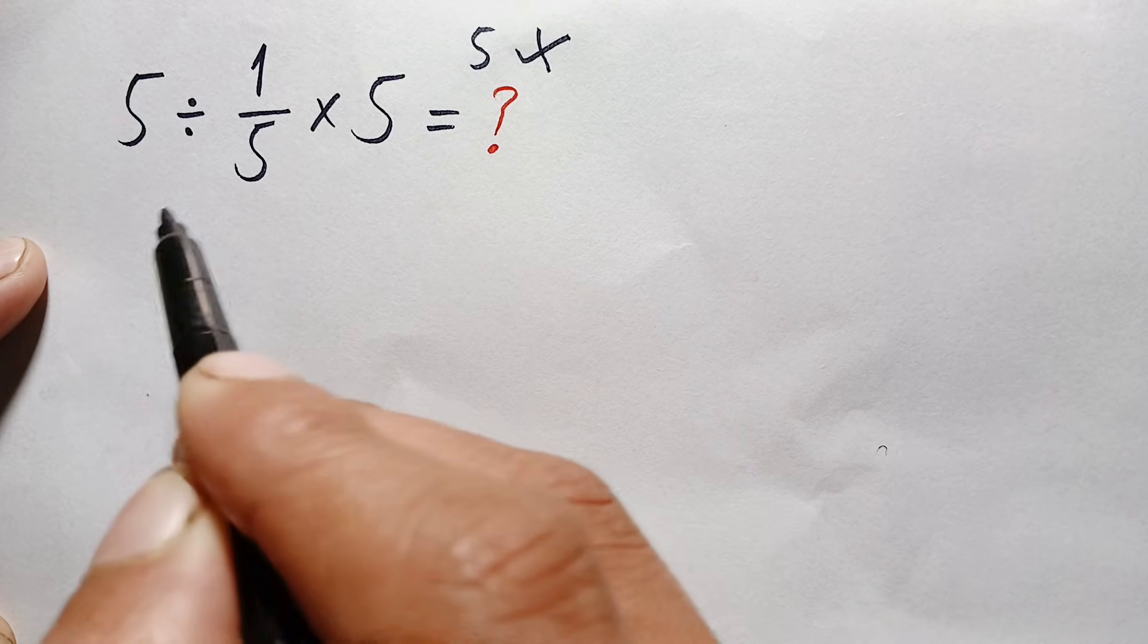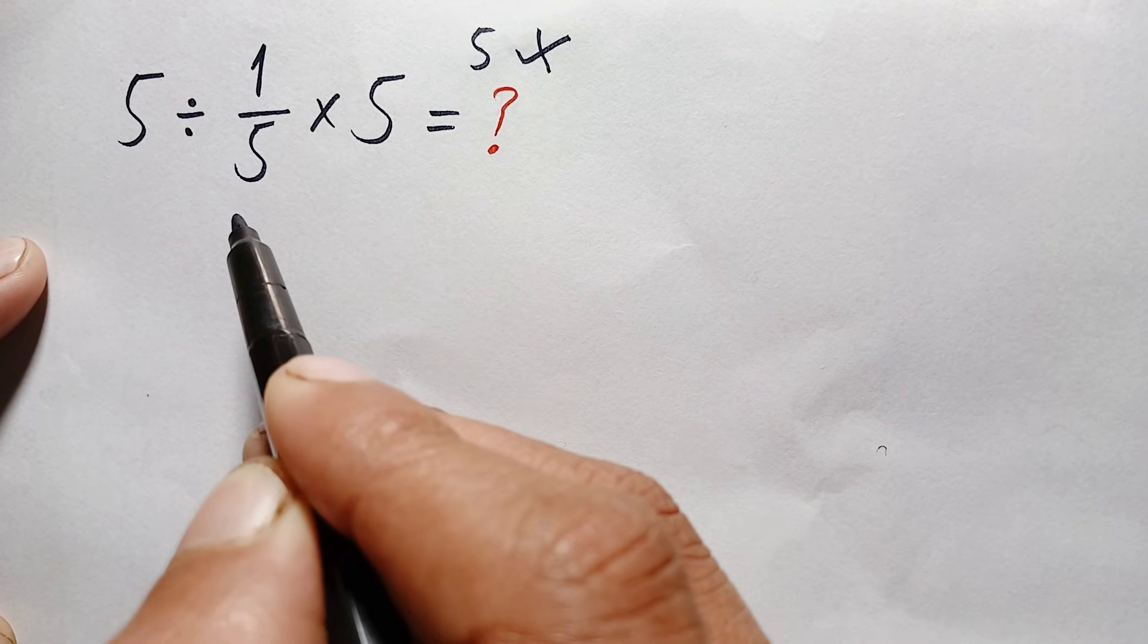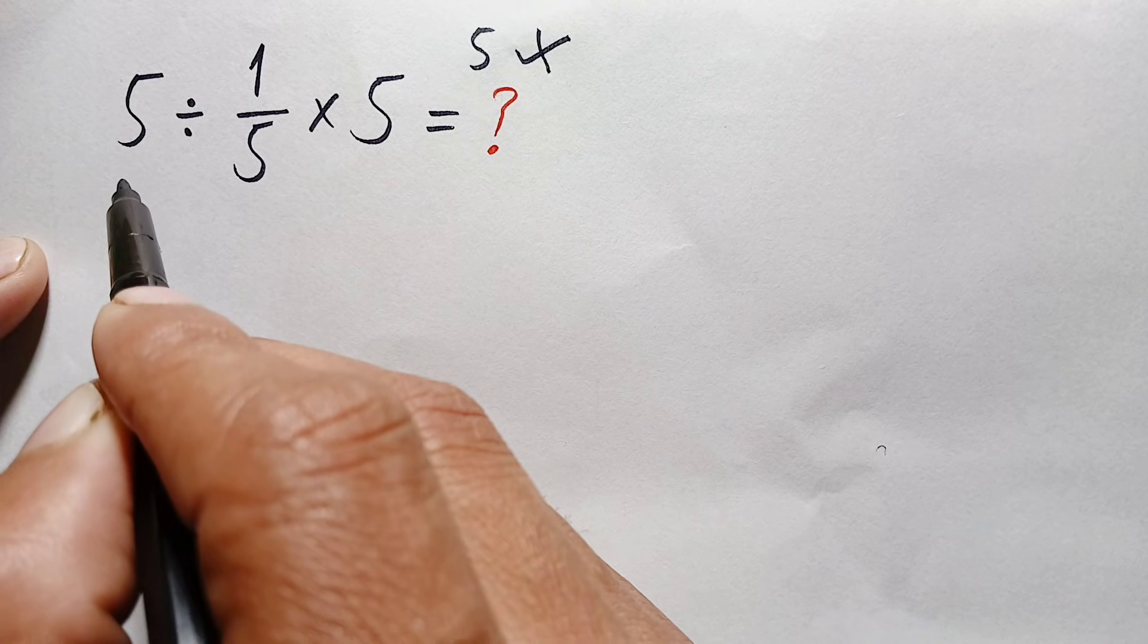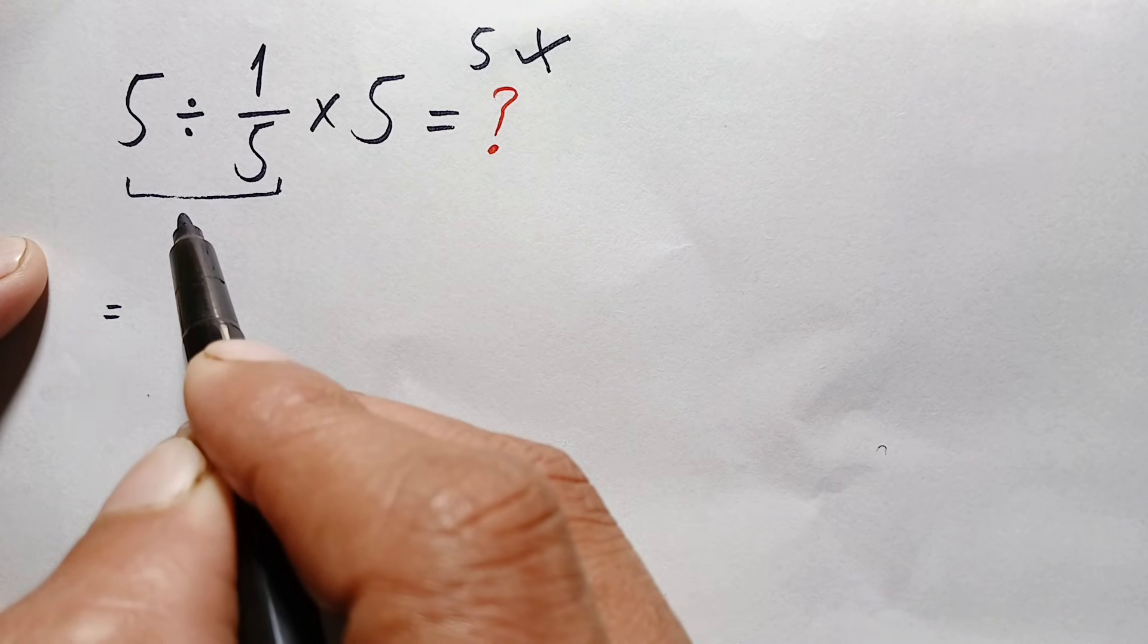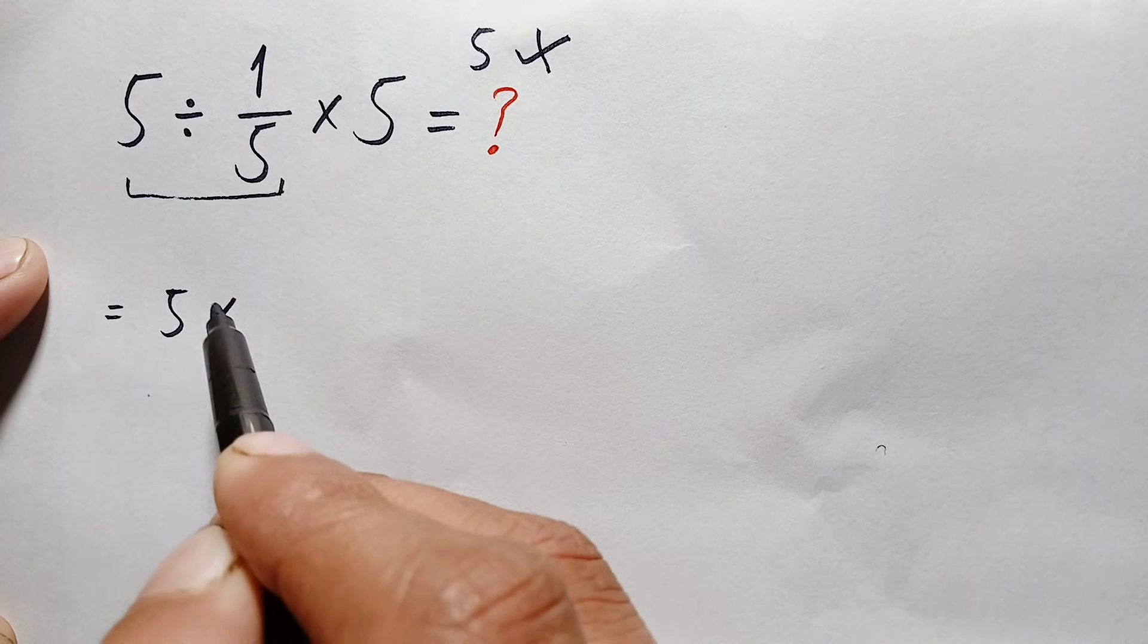Division and multiplication have equal priority from left to right, so first of all, according to the PEMDAS rule, we will do this division. Dividing 5 by 1/5, we'll apply the KCF rules: keep 5 as the same, change the division sign to multiplication,